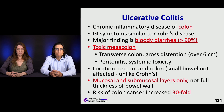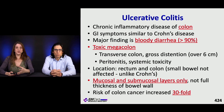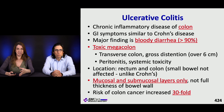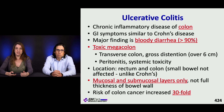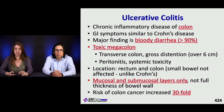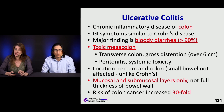Ulcerative colitis presents with similar symptoms to Crohn's disease, but the difference is it's isolated to the colon. Over 90% of patients present with bloody diarrhea. Toxic megacolon is a concern; patients can get extremely sick with systemic toxicity and peritonitis. There is mucosal and submucosal involvement only — not full thickness of the bowel — and this can increase your risk of colon cancer 30-fold.